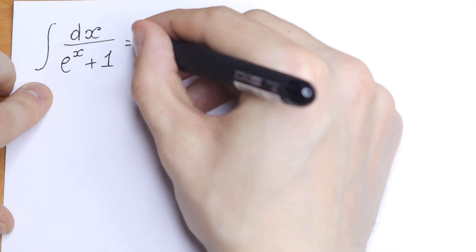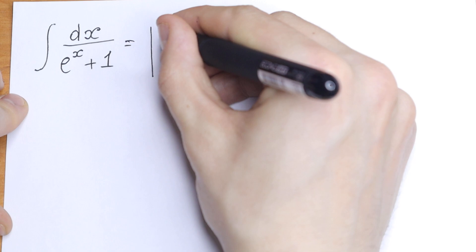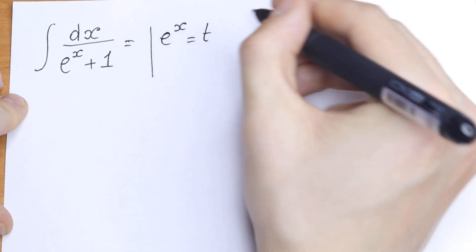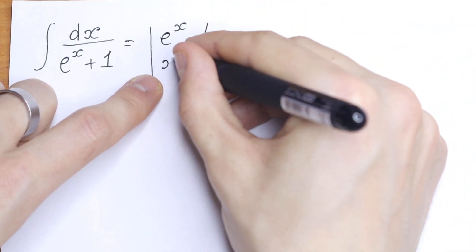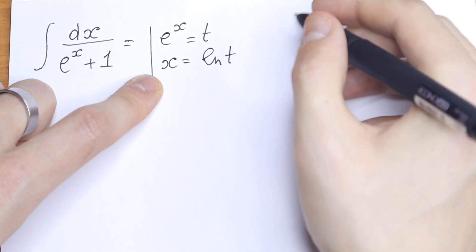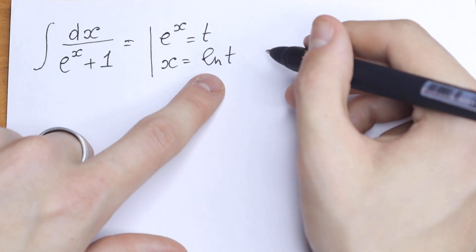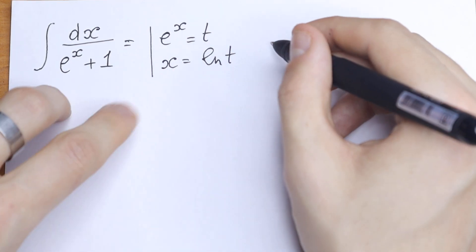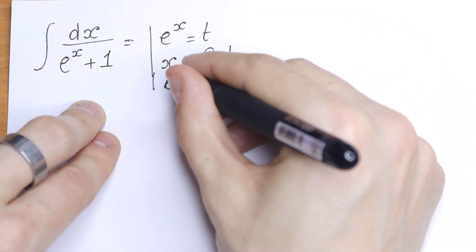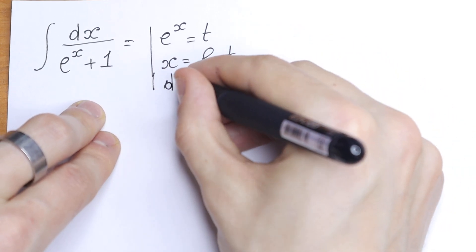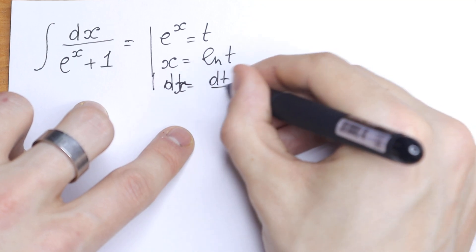I want to suggest a real good trick how to solve it. Let e to the power x be equal to t. So we will have e to the power x equal to t, and from here, if we take the natural log from both sides, we can find x. So x equals natural log of t. And let's find dx, because we need to change all of these elements with this substitution. So dx will be equal to dt over t.